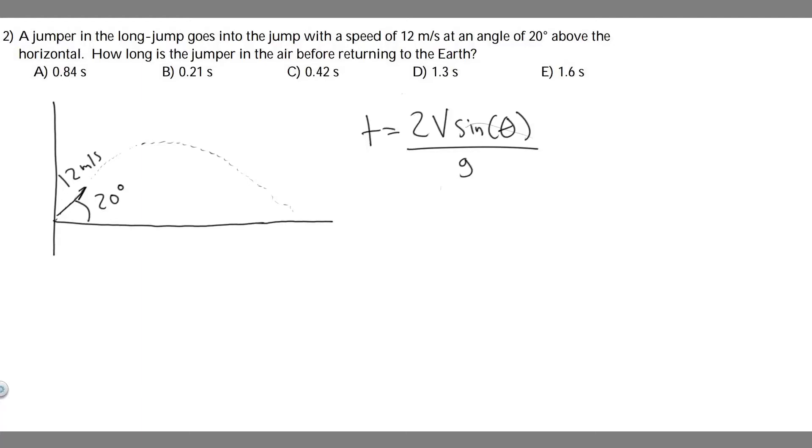In this problem, we're told a jumper in the long jump goes into the jump with a speed of 12 meters per second at an angle of 20 degrees above the horizontal. How long is the jumper in the air before returning to earth?